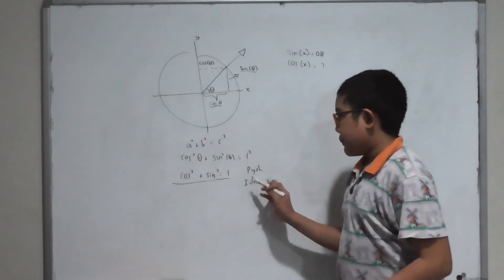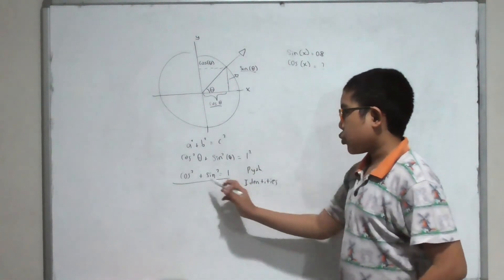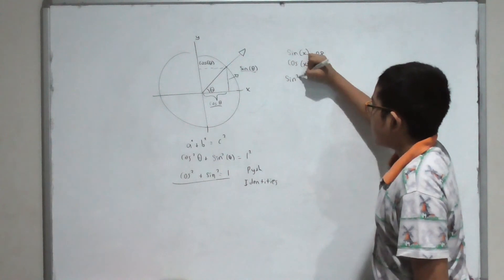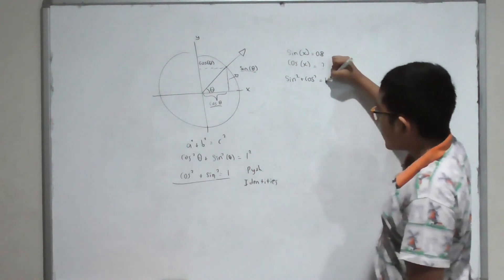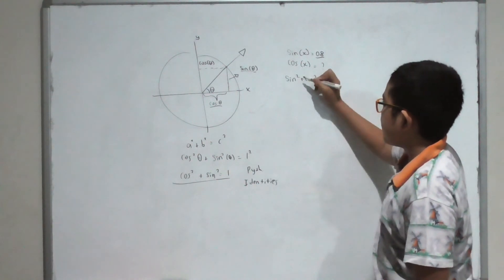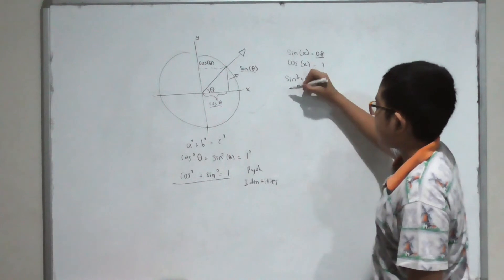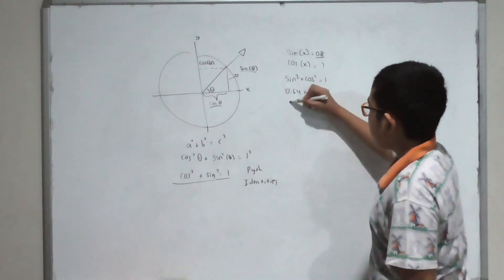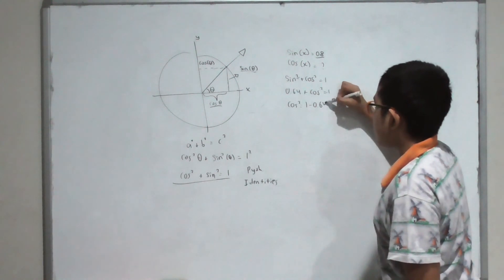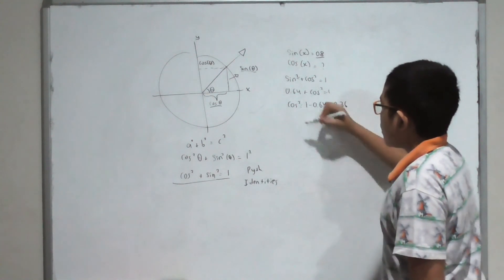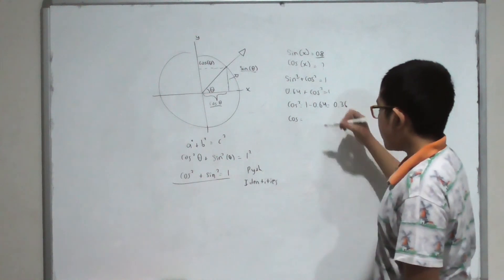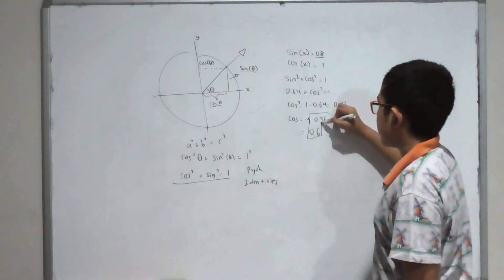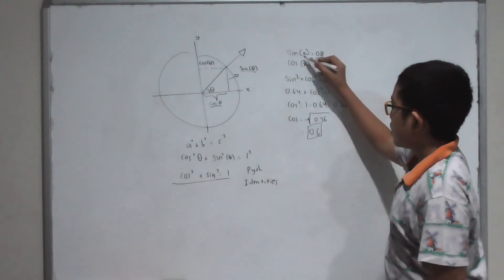The Pythagorean identity is exactly that — only sine and cosine. So we use: sine squared plus cosine squared equals one. Sine is 0.8, so 0.8 squared is 0.64. Then 0.64 plus cosine squared equals one, so cosine squared equals 0.36. Taking the square root, cosine equals 0.6. There you have it — even without knowing the angle, we can figure out the cosine.